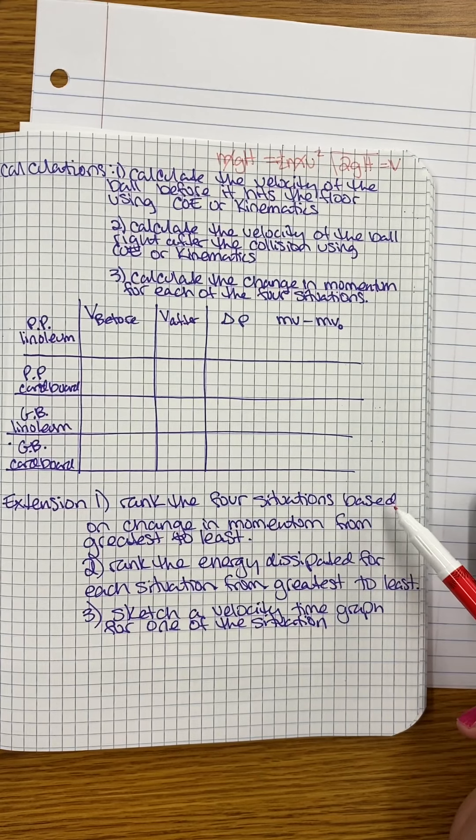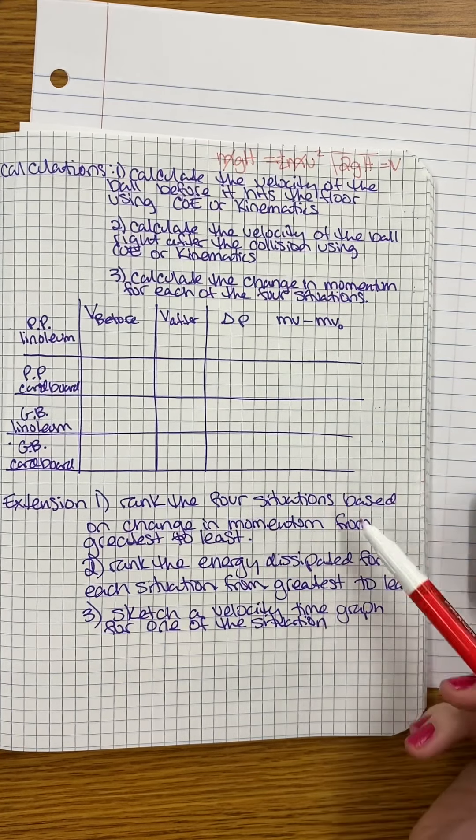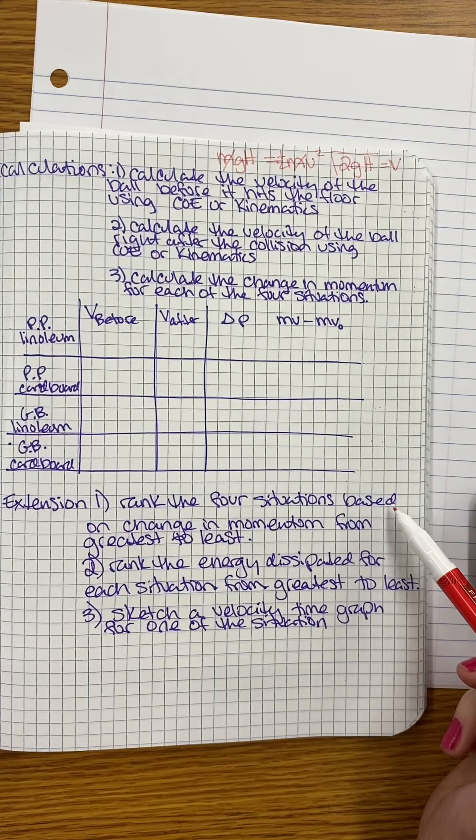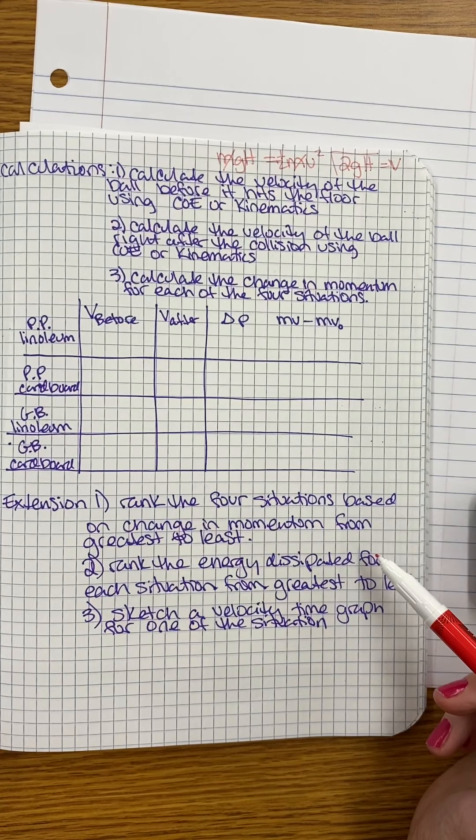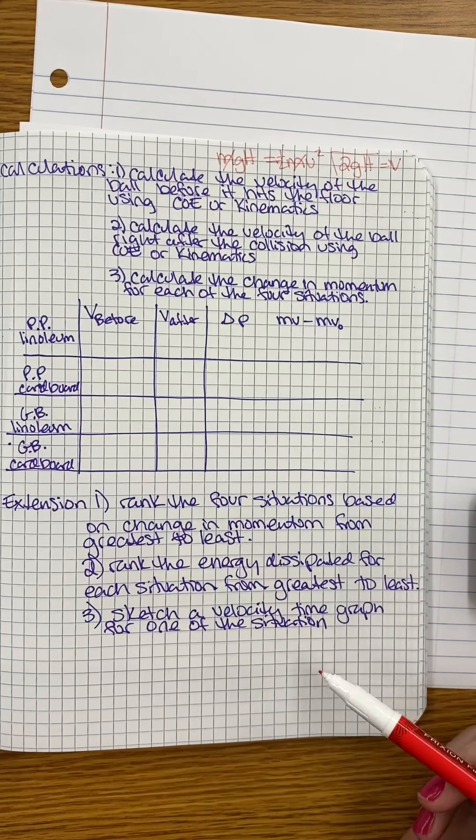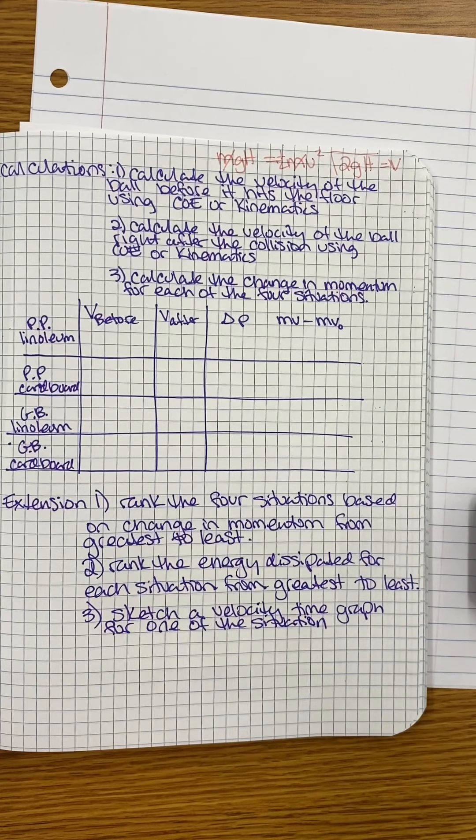When you have your change in momentums for all four of these scenarios, you're going to rank the four different scenarios based on their change in momentum. So the higher the return rate, the higher the velocity will be, but we also have to take into consideration the mass of each object.